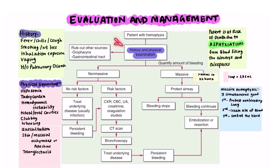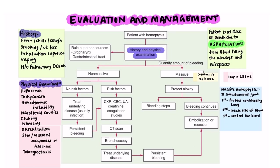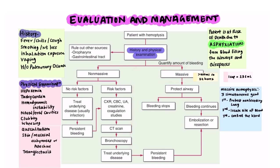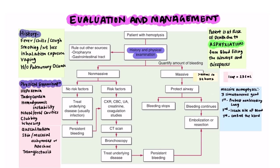We must quantify the amount of bleeding, as it is important for determining the next step. If the bleed is more than 400 ml in 24 hours, it is considered massive and life-threatening, and the approach differs from non-massive. Since patients won't report volume in milliliters, ask in cups — by US standards, one cup equals 236 ml.